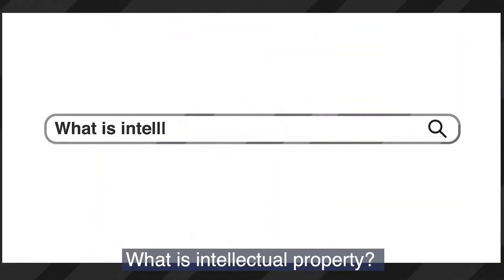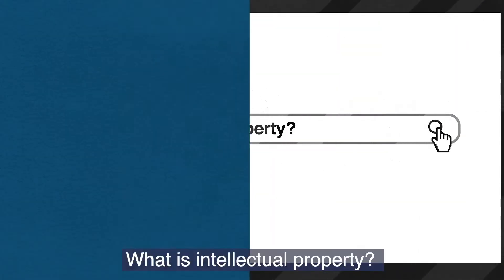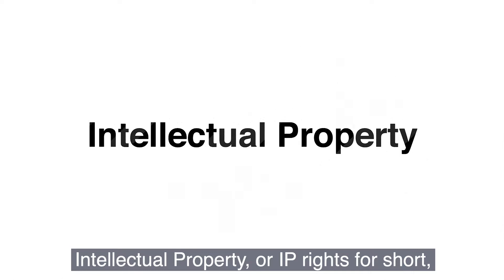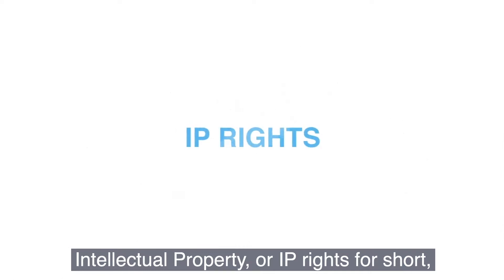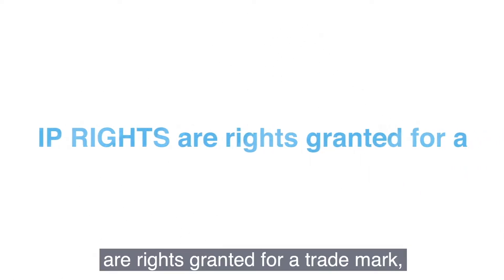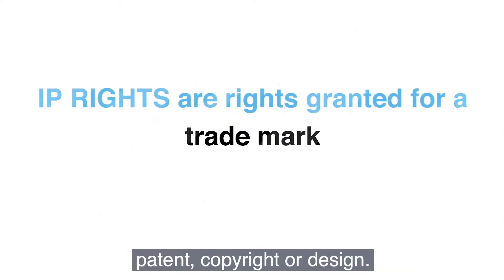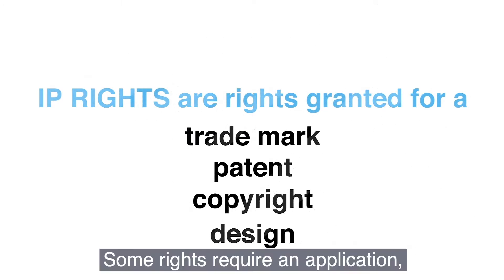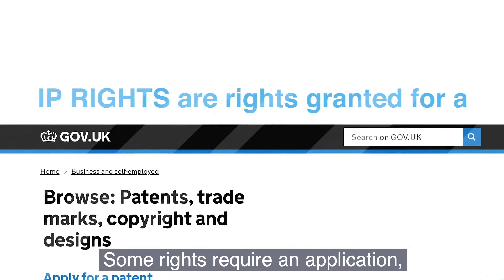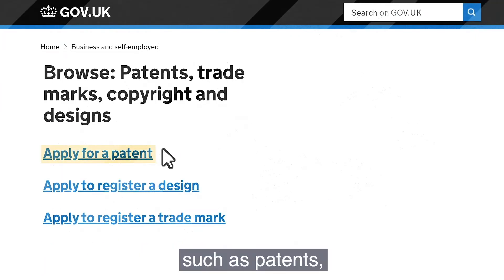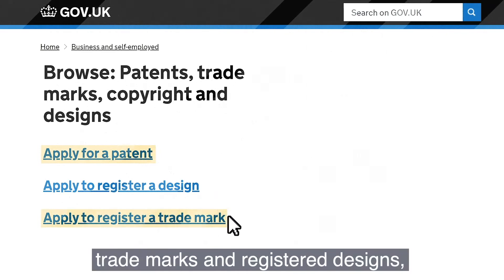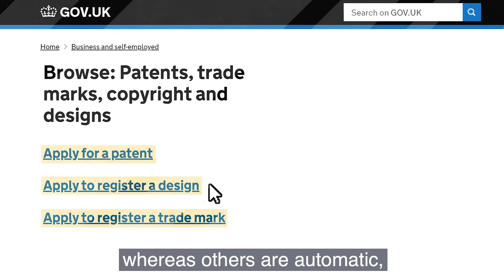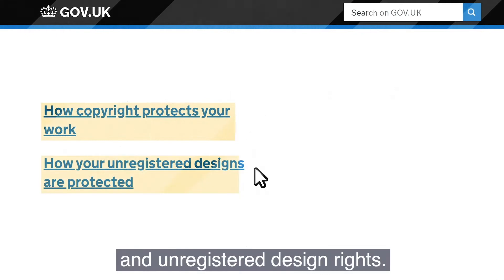What is intellectual property? Intellectual property, or IP rights for short, are rights granted for a trademark, patent, copyright or design. Some rights require an application, such as patents, trademarks and registered designs, whereas others are automatic, such as copyright and unregistered design rights.